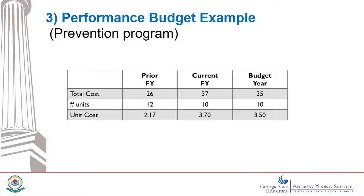What questions arise when you look at this display? You might ask where the total cost amount came from, or what types of units are being counted, and how to interpret the per unit cost. Assumptions are made for each row. Perhaps you remembered that the program budget showed the prevention program had an allocation of 25 — so why is it 35 here? The difference between 25 and 35 will be explained on the next slide, but essentially the prevention program will drive costs in other budgeted programs.